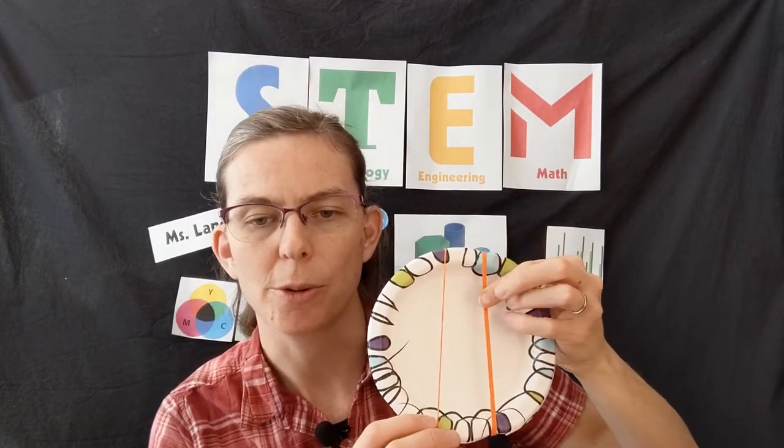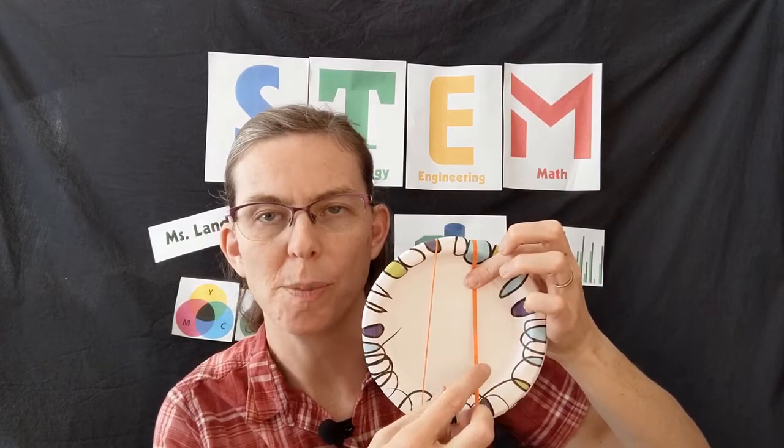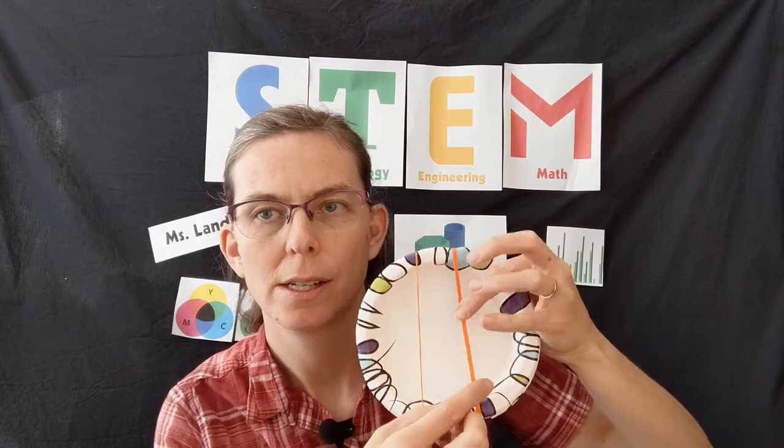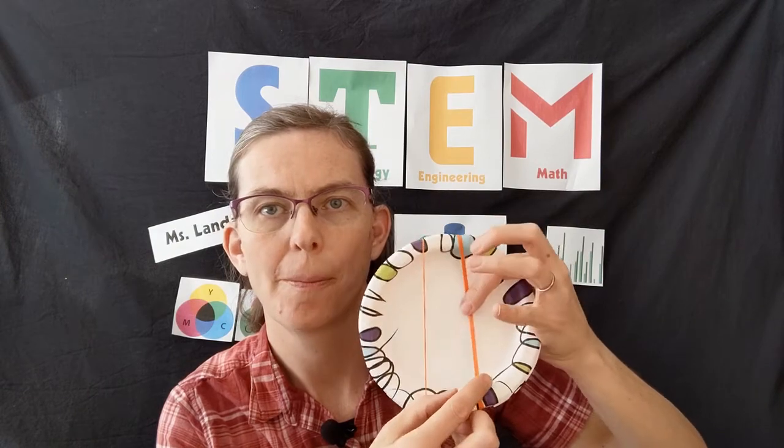Now if we pluck the rubber bands, we can see a vibration and hear a note. If we want to play a higher note, we can make the rubber band shorter by pressing down at different spots. That will make it vibrate faster and make a higher sound.